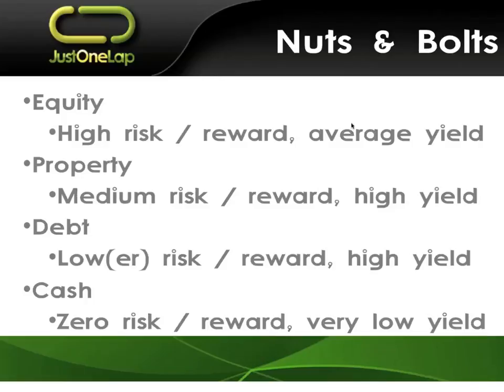It depends on the quality of the debt. Top of the list is US Treasury bills; bottom is some junk bond you've never heard of. Debt gives you lower risk, lower reward, and typically a nice high yield - though that yield might not be any higher than property, which is fine given the lower risk. Cash is zero risk, very low yield. That's not completely true if you're holding US dollars, as that gives you some geographic diversification which does introduce some risk and reward.